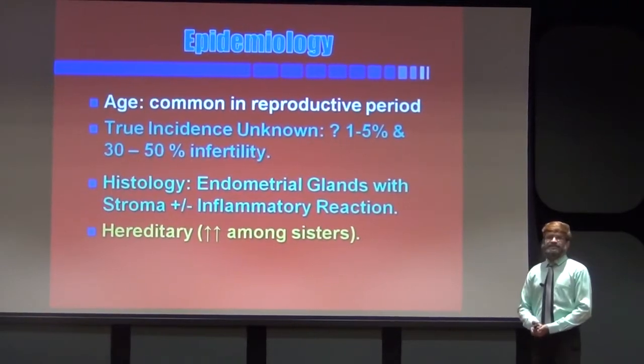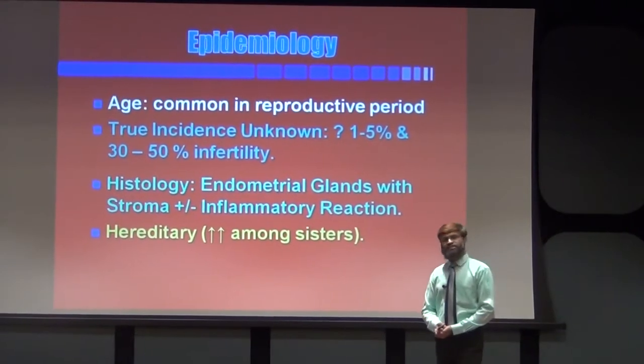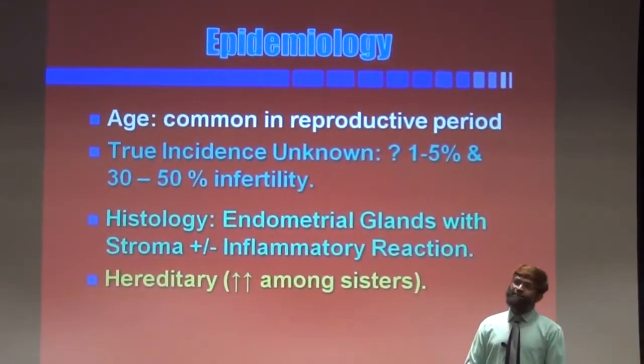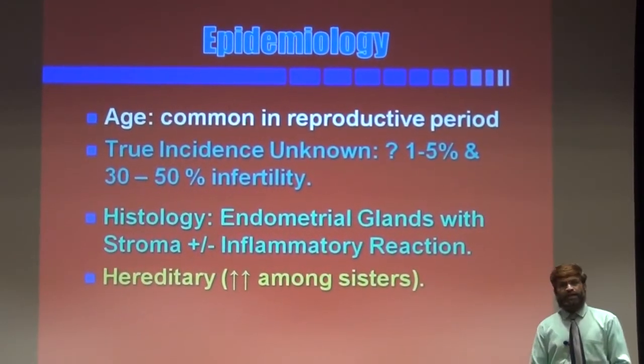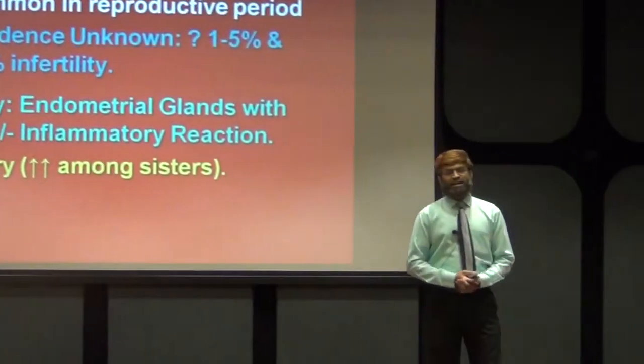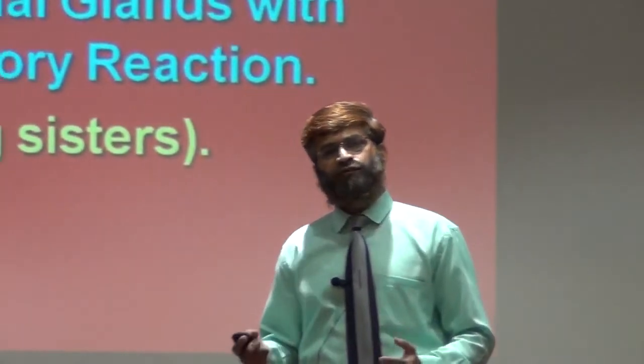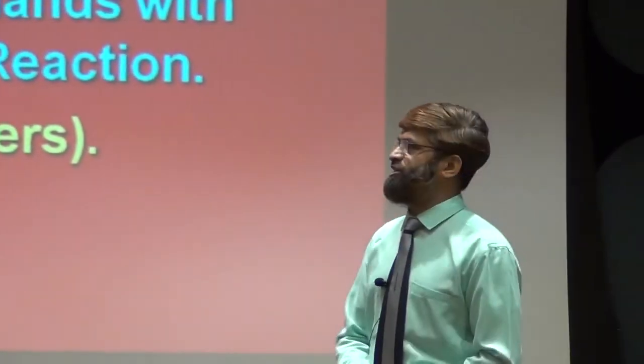Endometriosis has a genetic linkage. Females who suffer from endometriosis, if they conceive in the future, there are chances due to genetic predisposition. Research shows that there are a few genes — some HLA linkages are available — because of which daughters of mothers who suffered from endometriosis have the chance of suffering from endometriosis in the future.